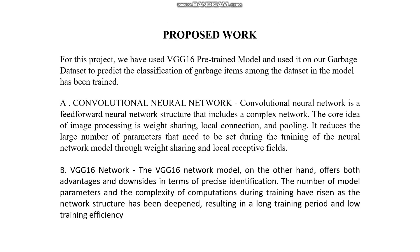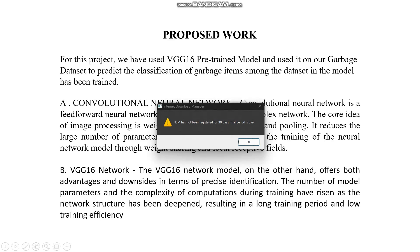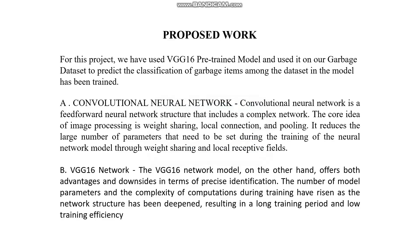Here is our proposed work. We have used a pre-trained VGG16 model in which we trained our own dataset to attain a higher level of accuracy. VGG16 is a convolutional neural network that is 16 layers deep. You can load a pre-trained version of the network trained on more than a million images from the ImageNet database. The pre-trained network can classify images into thousands of object categories such as keyboard, mouse, pencil, and many animals. Out of all the models available, VGG16 turns out to give better accuracy overall depending on the system used for classification.